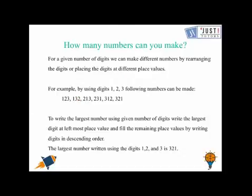Let's work to form some numbers here. For a given number of digits, you can make different numbers by simply rearranging the digits or placing the digits at different place values. For example, look at the first question here. We are given the digits 1, 2, and 3. So, let's see what all possible numbers we can make from these given three digits.